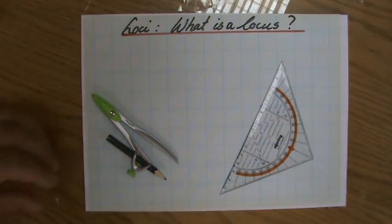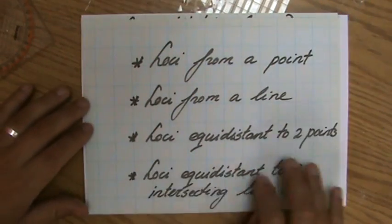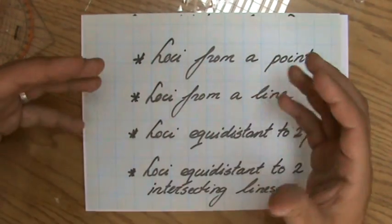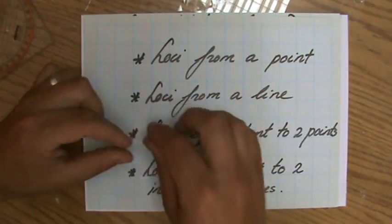And you have four different types. And in the next videos, I'm going to show each one of them with example questions. You have the loci from a point. You have the loci from a line.